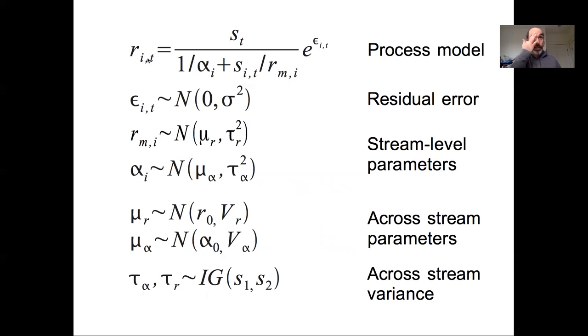We then have these two parameters that are allowed to vary so they need parameter models. If we're looking at the recruits in stream i at time t, we might have alpha that varies by stream i and RM that varies by stream i. We have the stream level parameter models describing how RM and alpha have some overall means, mu r and mu alpha, and some variability, tau r and tau alpha. We end up needing to put priors on these parameters. So we have priors on mu r and mu alpha and tau r and tau alpha. These are the cross stream means and the cross stream variances.